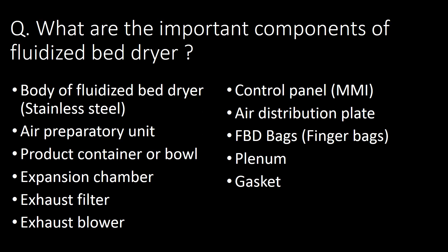What are the important components of a fluidized bed dryer? The important components are: the body (made of stainless steel), air preparatory unit, product container or bowl, expansion chamber, exhaust filter, exhaust blower, control panel, air distribution plate, bag filters (finger bags), plenum, and gasket.